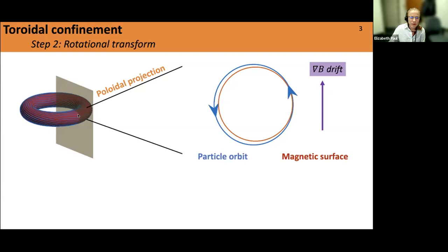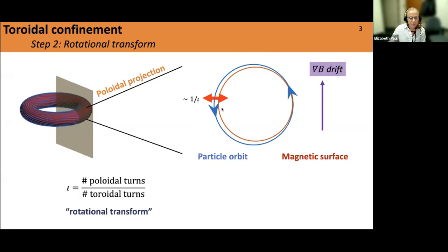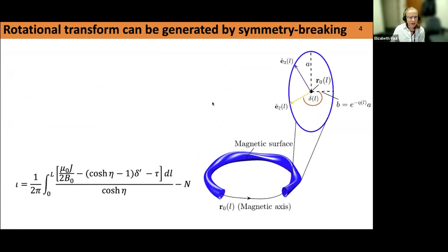If a guiding center lies on the surface, it's going to feel a net drift in the vertical direction. We can try to cancel this out by getting the guiding center to go from the outside of the torus to the inside, so that by moving around the torus we get a net cancellation of this drift on average — giving us good confinement. The way we quantify this is through a number called the rotational transform, which tells us the number of poloidal turns of a given field line per toroidal turn. The typical width of the guiding center orbit goes inversely with iota, so larger iota gives better confinement.